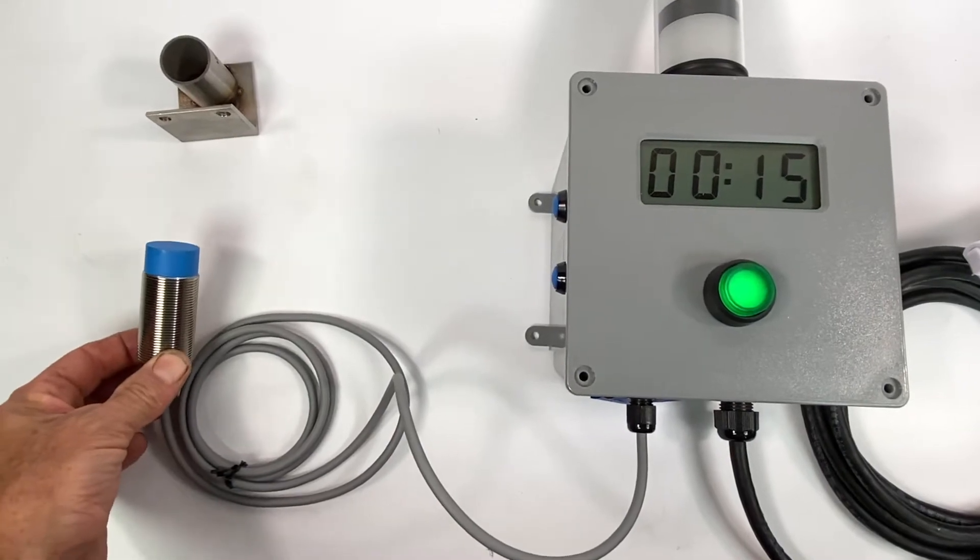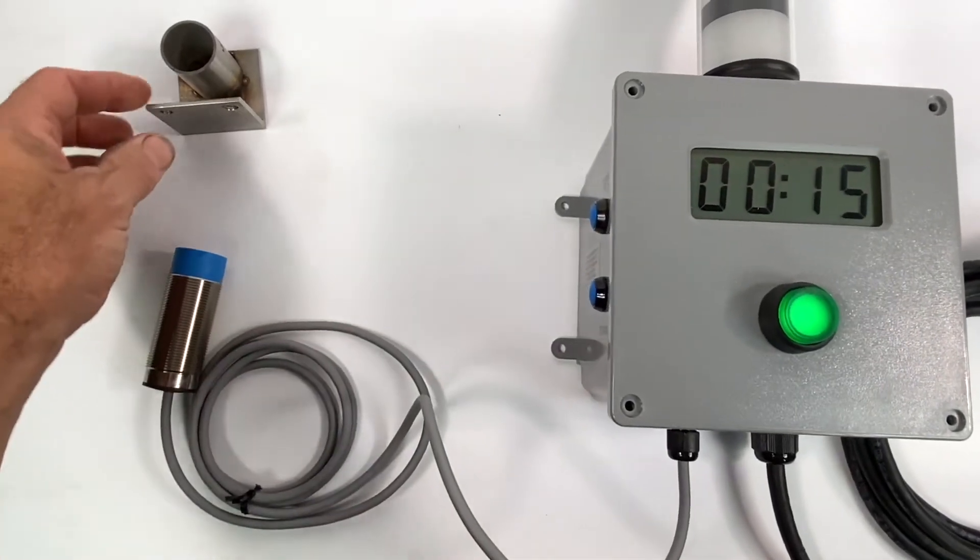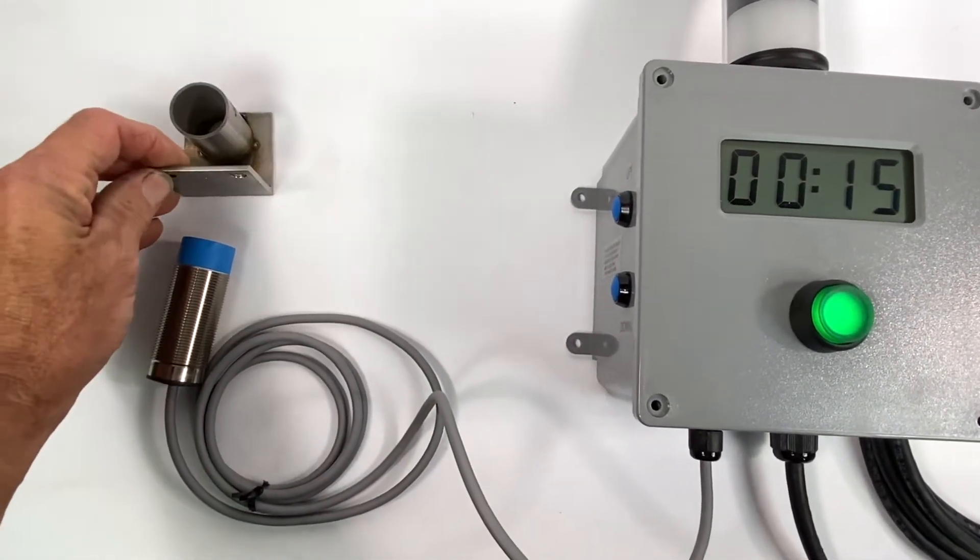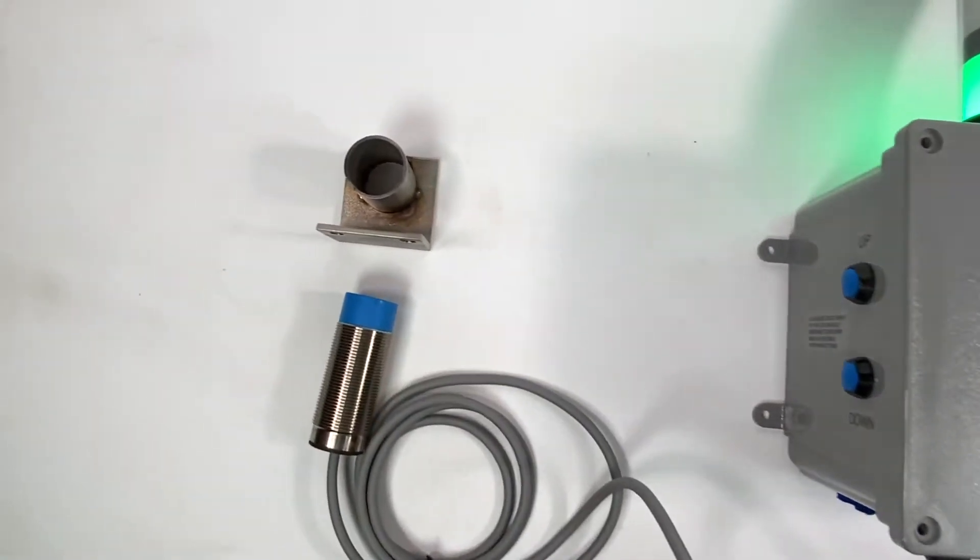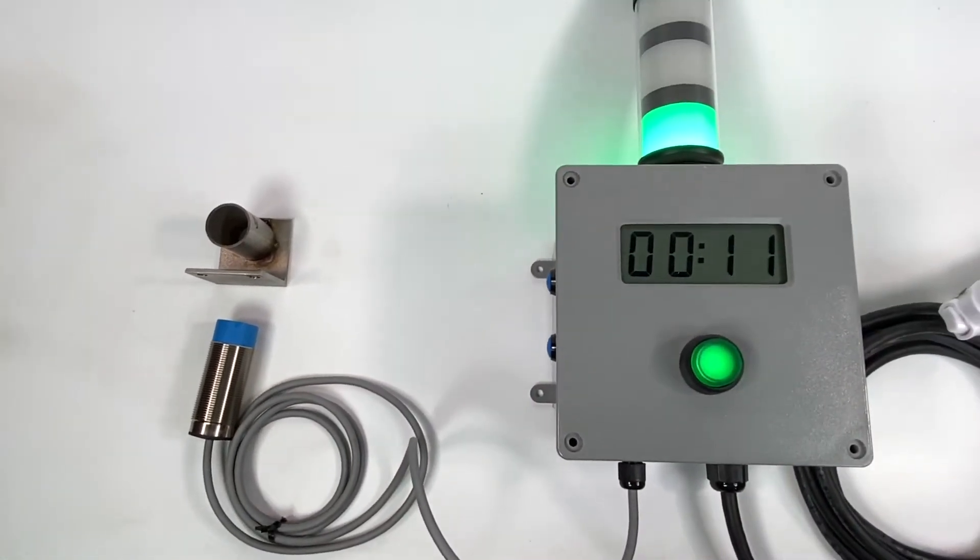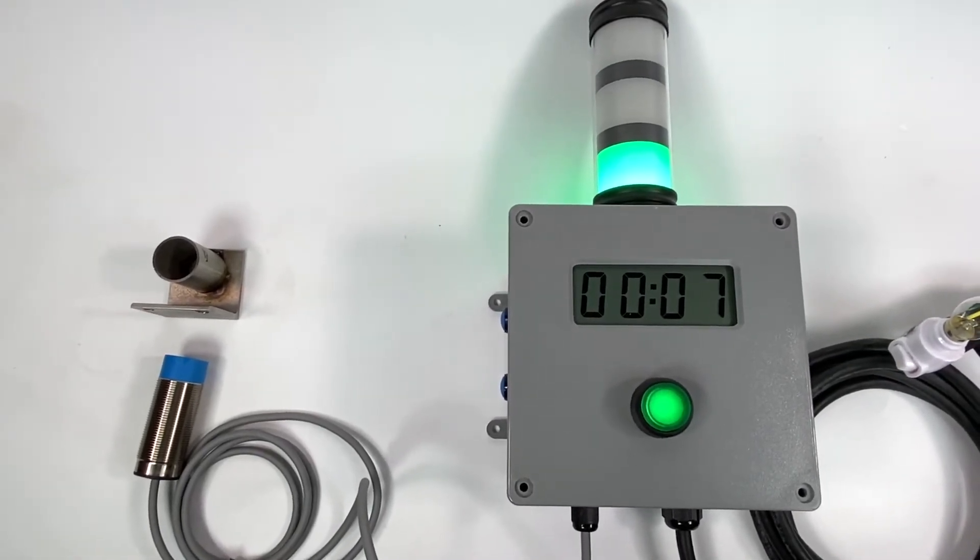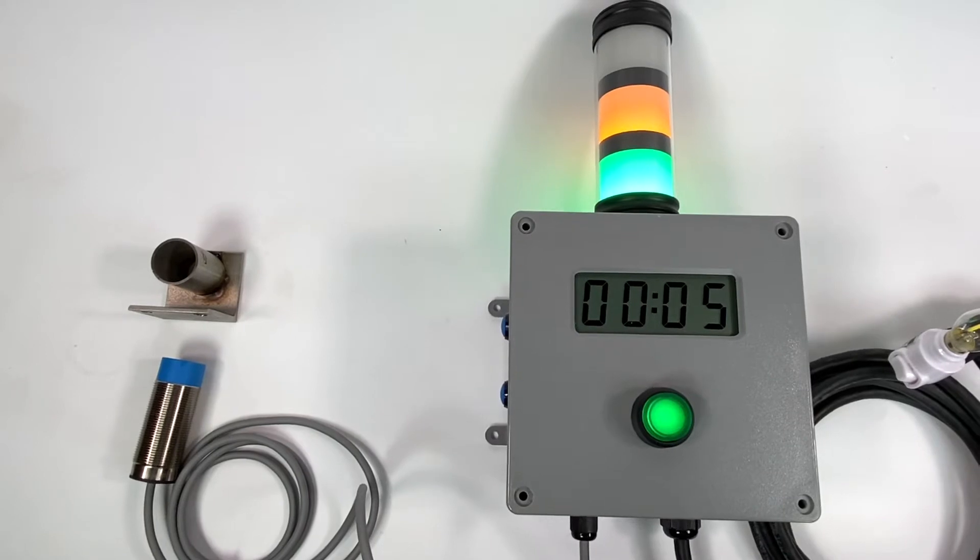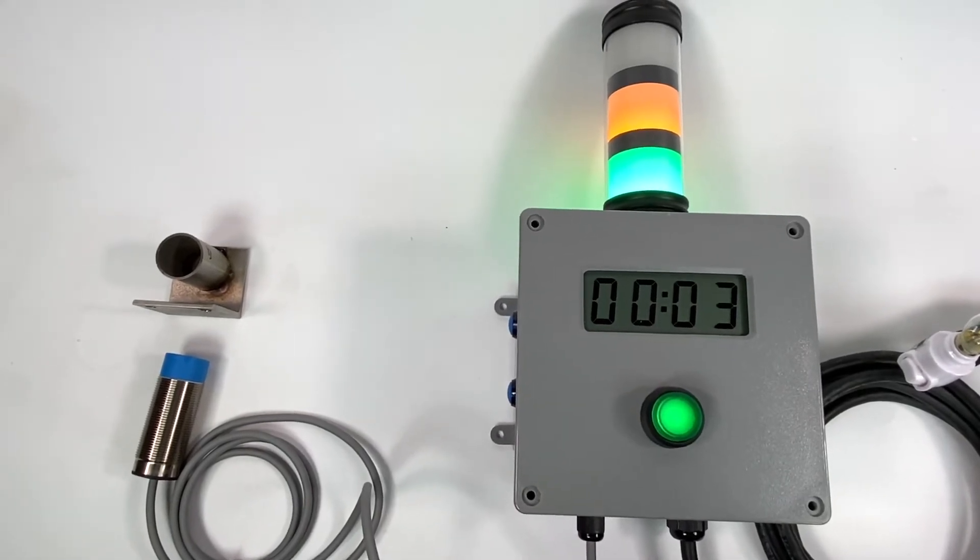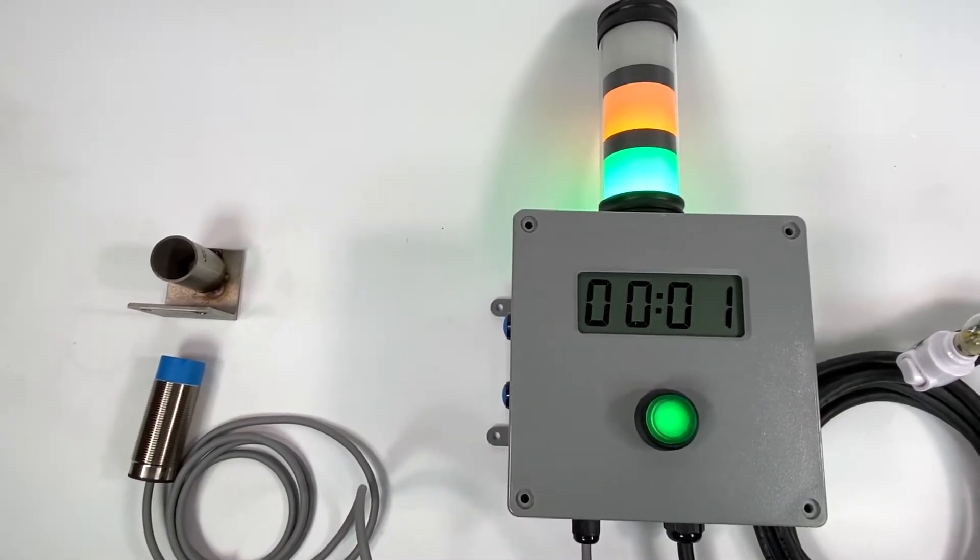This is an inductive proximity switch. In this case it's sensing a stainless steel bracket, and you can see that it's quite some distance away, 40 millimeters away, and it'll initiate the cycle. There's an early warning right there that calls the operator over to tell them that the end of the cycle is close.